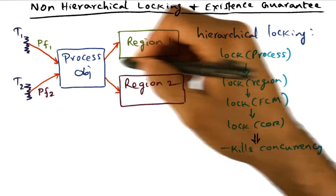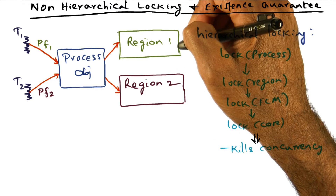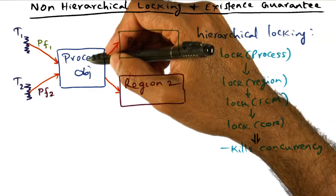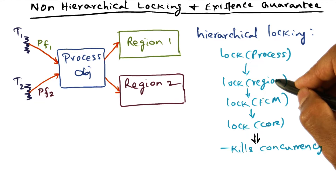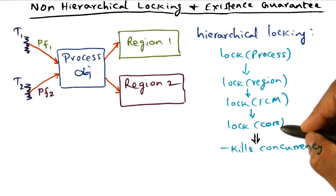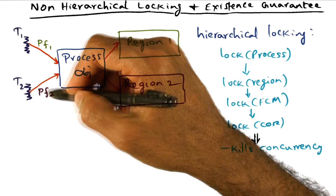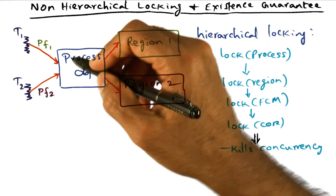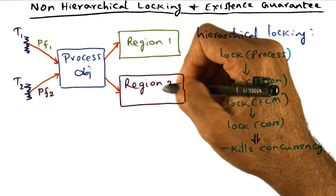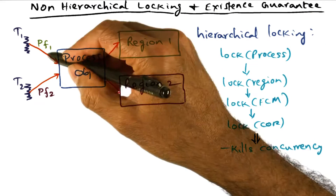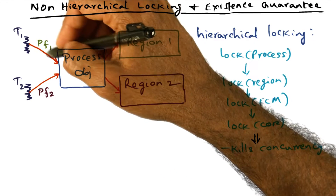We might do hierarchical locking. If I want to do some modifications to the region object to indicate that I'm modifying the data structure that corresponds to this portion of the address space, I might lock the process object, lock the region object it corresponds to, lock the FCM object that is backed by this region, and lock the COR object that is actually going to do the IO. Now let's say the operating system is incurring a page fault for the second thread T2, and this page fault is happening on the same processor, so it shares the same process object.